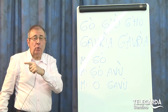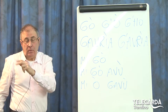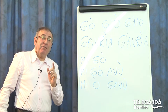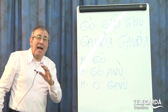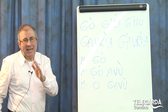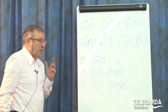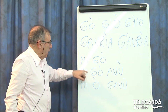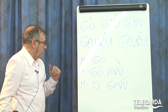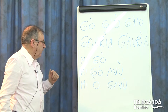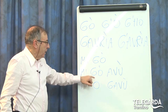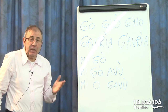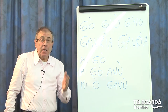Ma qualcuno mi ha fatto notare, mi ha detto: ma guardate che si può dire anche... 'mi go avu' è la forma che ho proposto io, e qualcuno cosa ha fatto? Prende la G e la mette qui: mi o ga vu. Certamente, si dice anche 'mi o ga vu'.